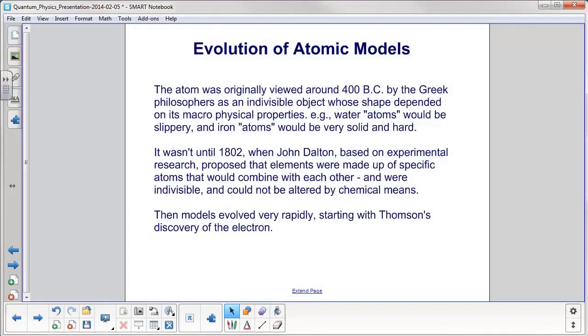Back in 400 B.C., Greek philosophers felt that the atom was an indivisible object whose shape depended on its macro-physical properties. For example, water atoms would be slippery, and iron atoms would be very solid and hard. It wasn't until 1802, so 2200 years later,